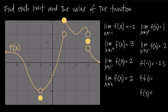What about the value of the function at f of 1? Coming to x equals 1, we have a hollow circle at y equals 2 and a solid circle at y equals 3. The value of the function is always at the solid circle, so the value of the function here is 3.